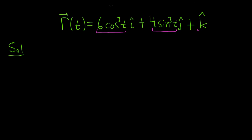So first notice that this is really 6 and then parentheses, cosine t, and it's cubed. Likewise, this is 4, sine t, and it's cubed. So when we take the derivative here,